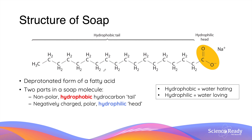The structure of a soap molecule is divided into two parts: a long hydrocarbon tail and a smaller carboxylate head. The hydrocarbon tail is non-polar, whereas the carboxylate head is polar due to its negative charge. As a result, the tail is described as hydrophobic, as it dislikes water, which is polar.